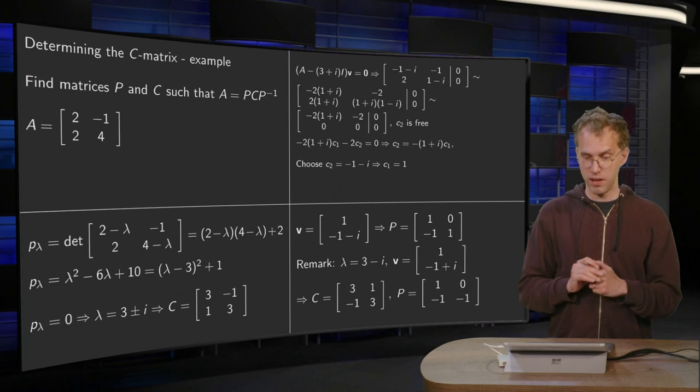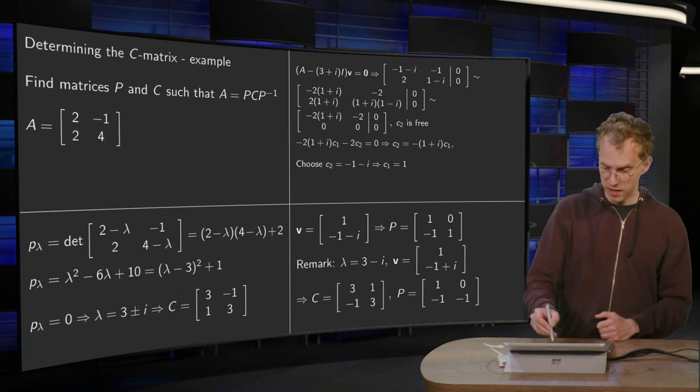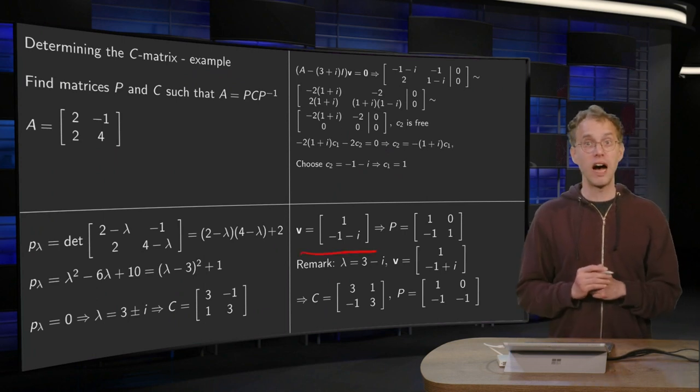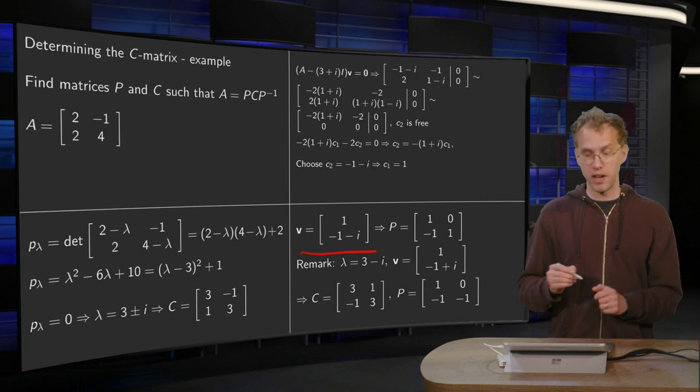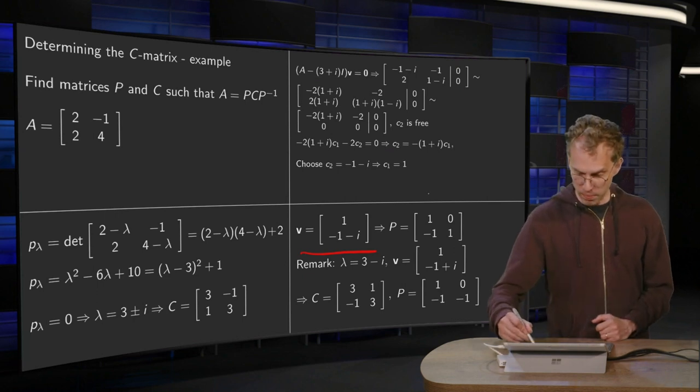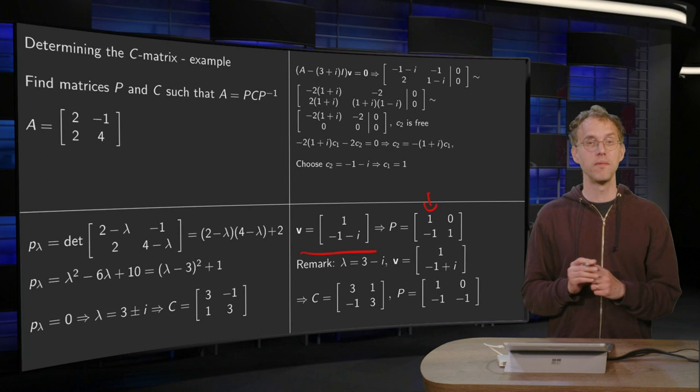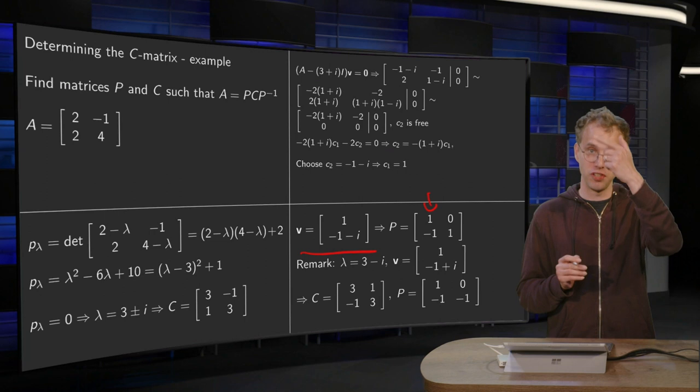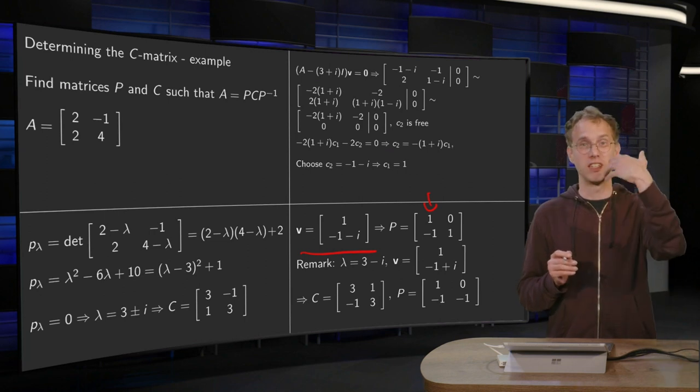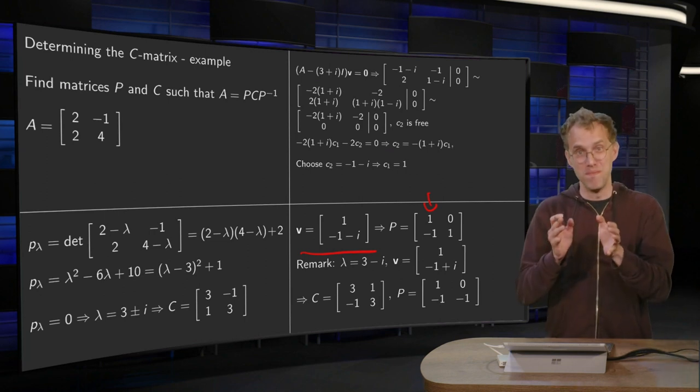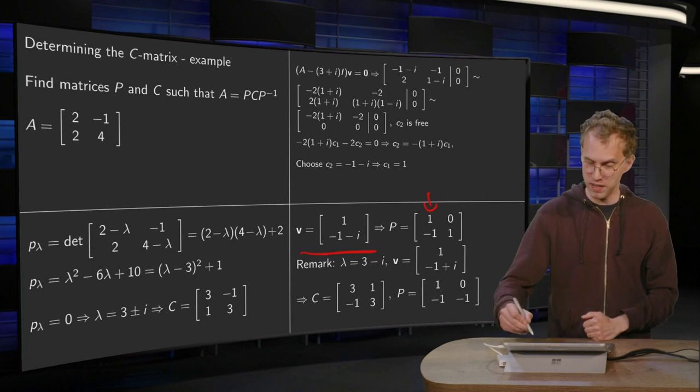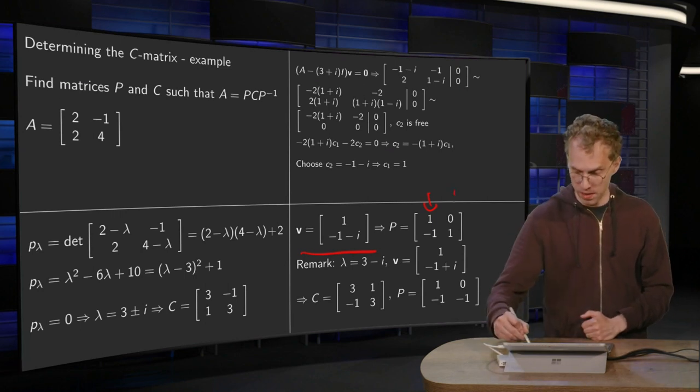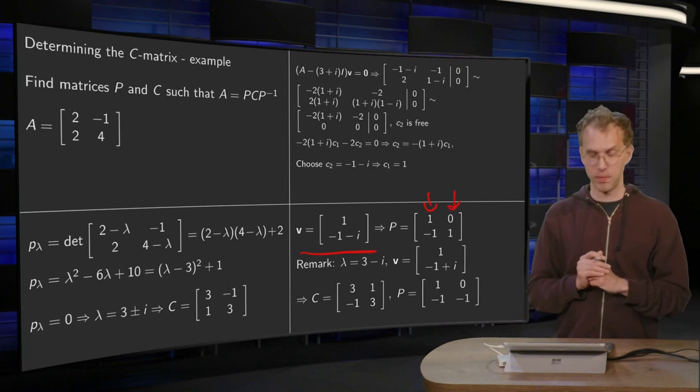And now we can form our P because we have our v. So how do we get our P? Well, as our first column, we have the real part of v. So that's [1, -1]. And the imaginary part of v equals [0, -1]. But as our second column, we have minus the imaginary part of v. So we get [0, 1]. So there is our matrix P.